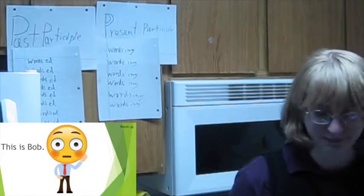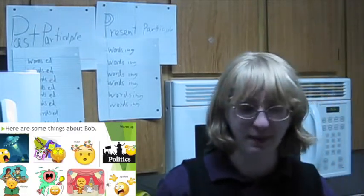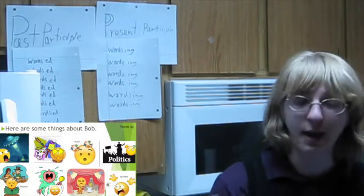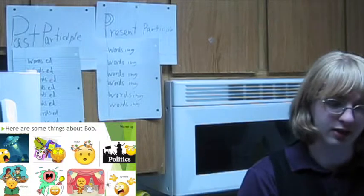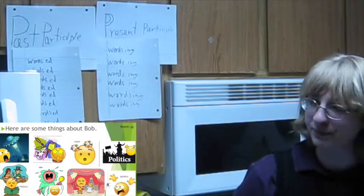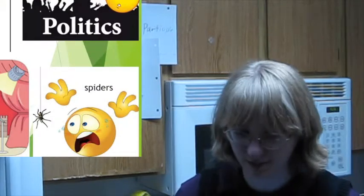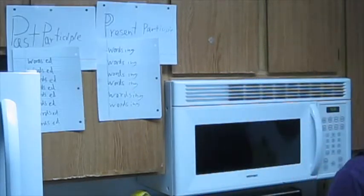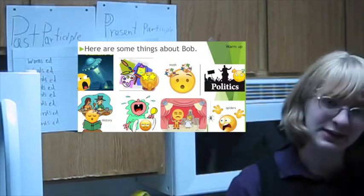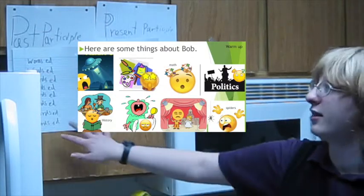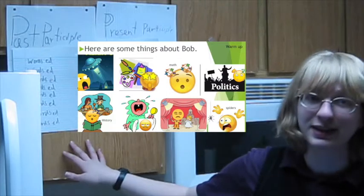So this is Bob. Here are some things about Bob. We want to think about what Bob is feeling about these different things. For example, Bob is frightened by spiders. Oh, spiders! He's frightened by them. And frightened is a past participle.